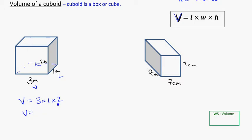So my volume here, 3 times 1 is 3 times 2 is 6 meters cubed, because I'm dealing with volume. And I've timesed three things together, so I'll have a power of 3 as my unit, 6 meters cubed.